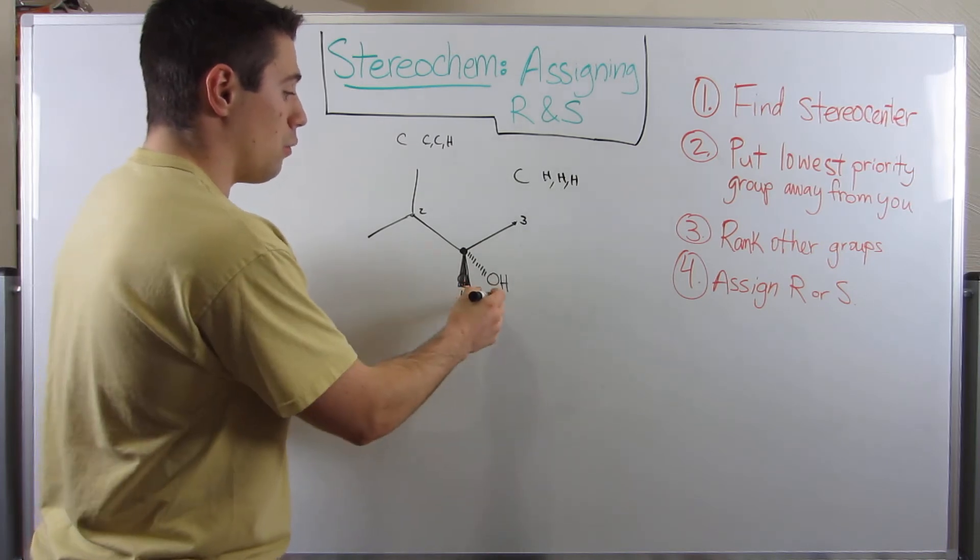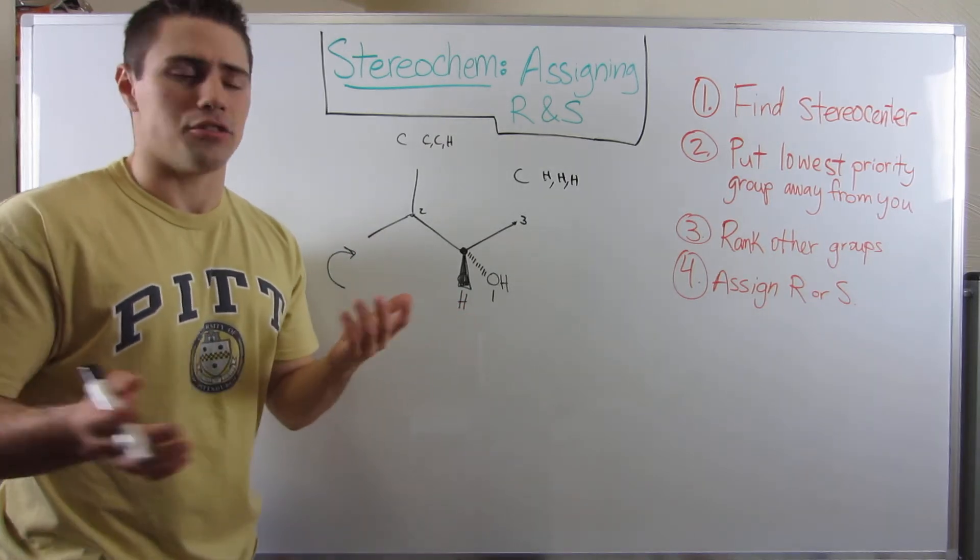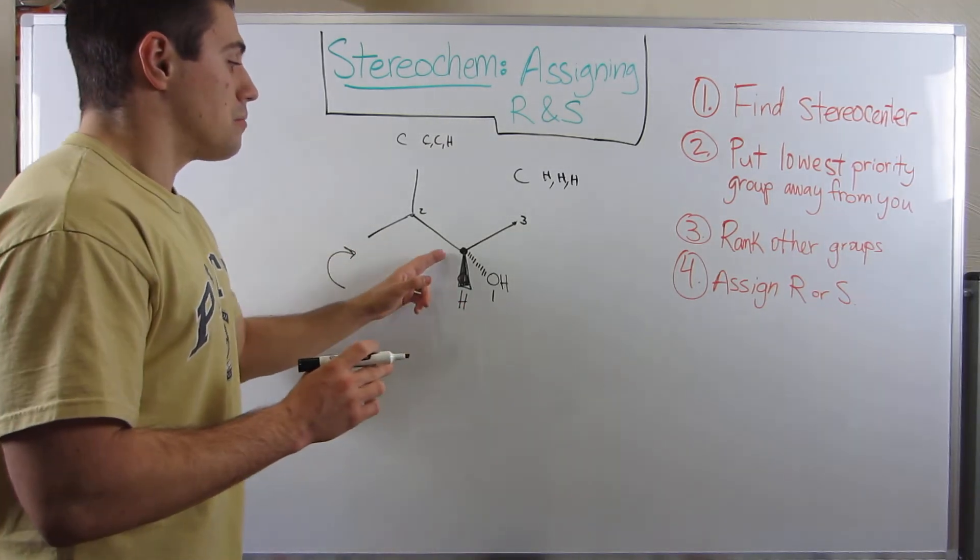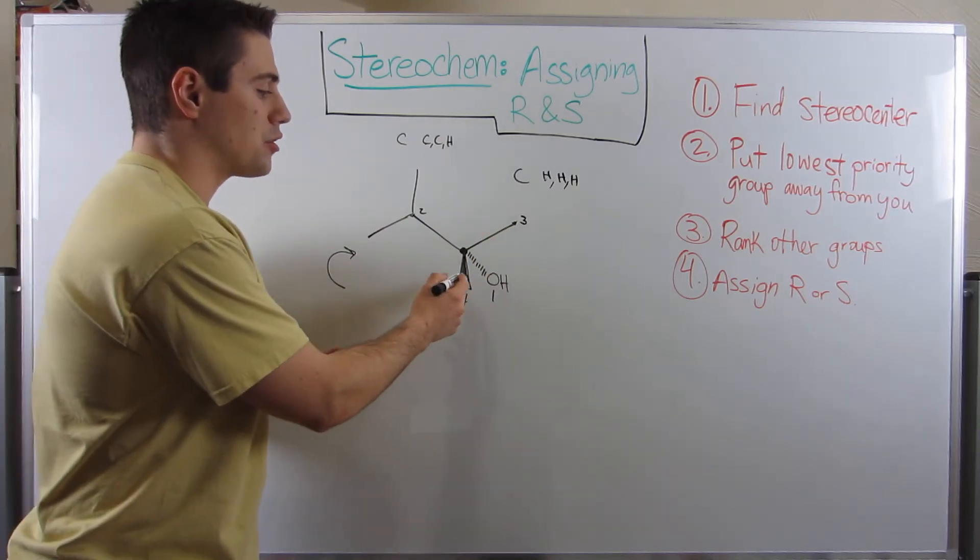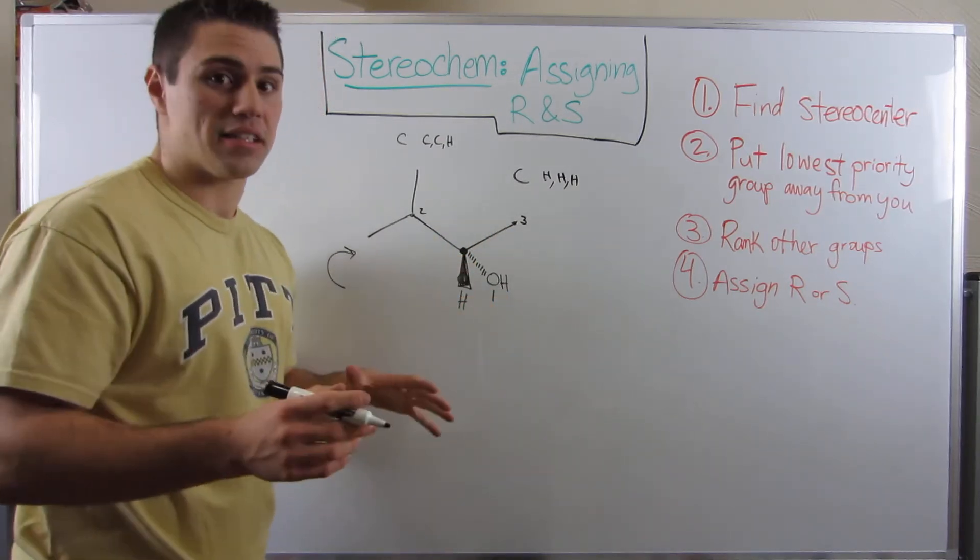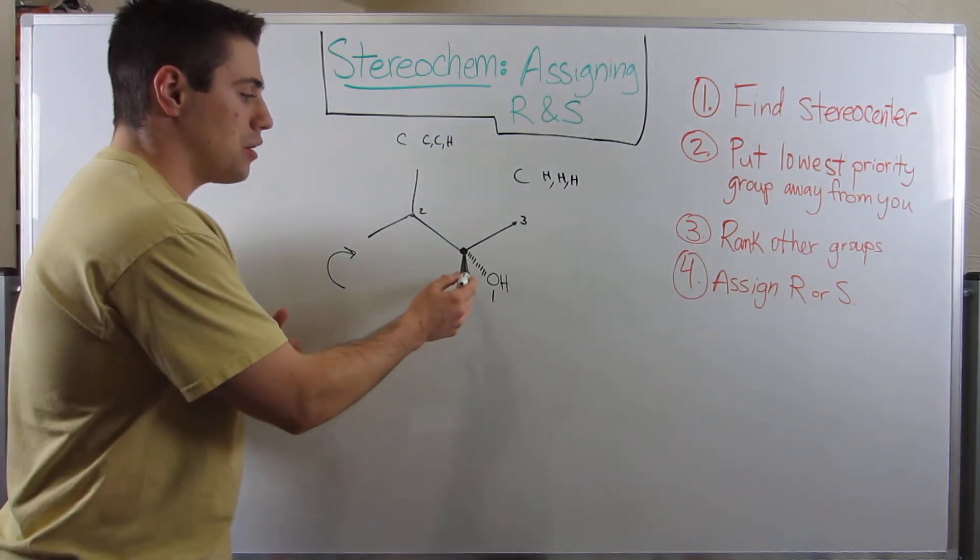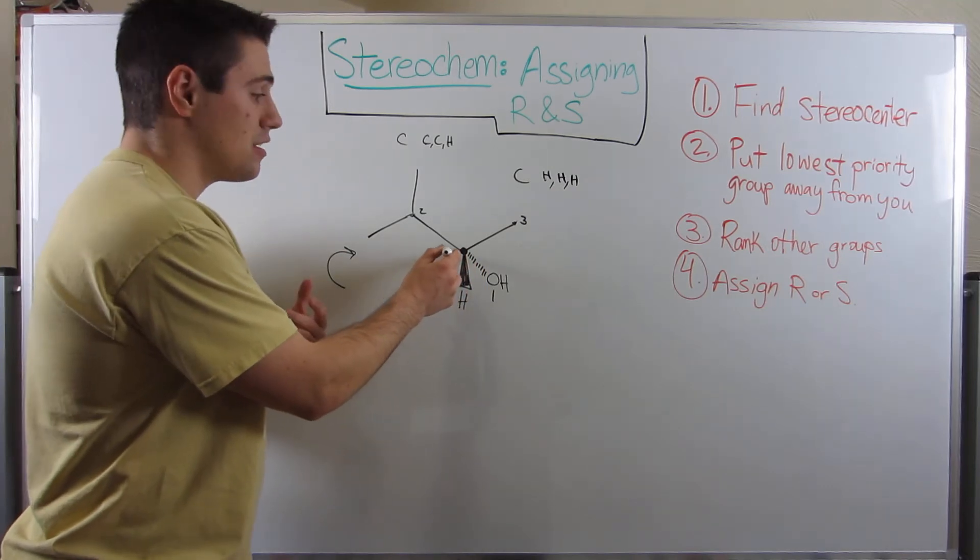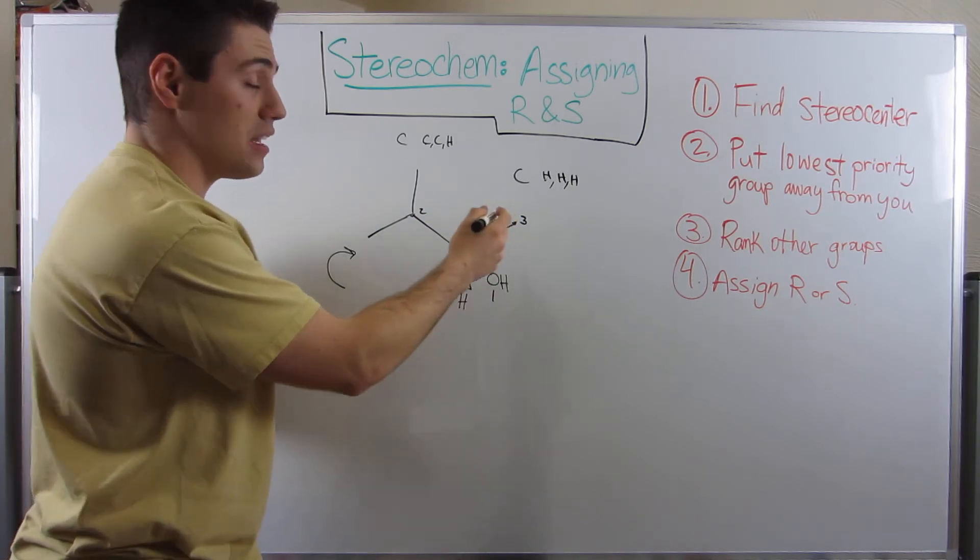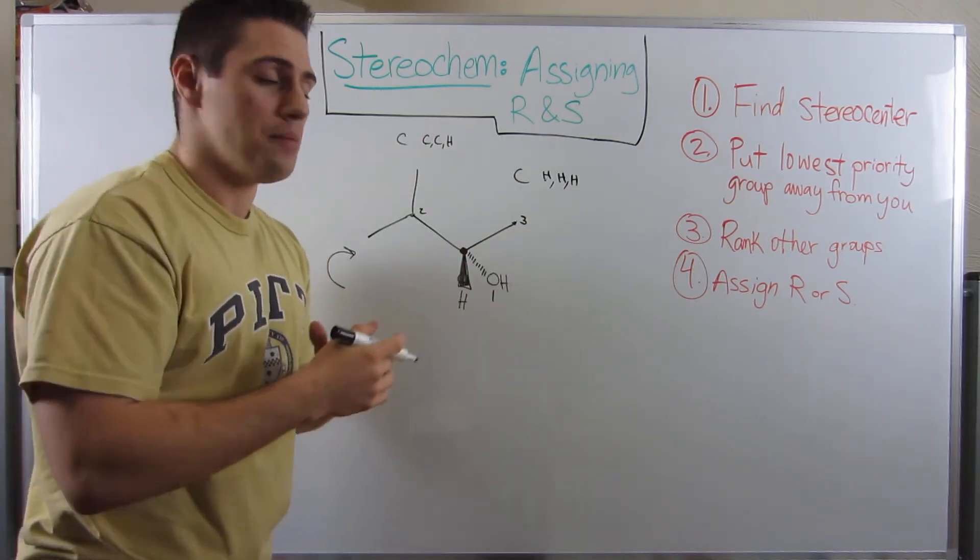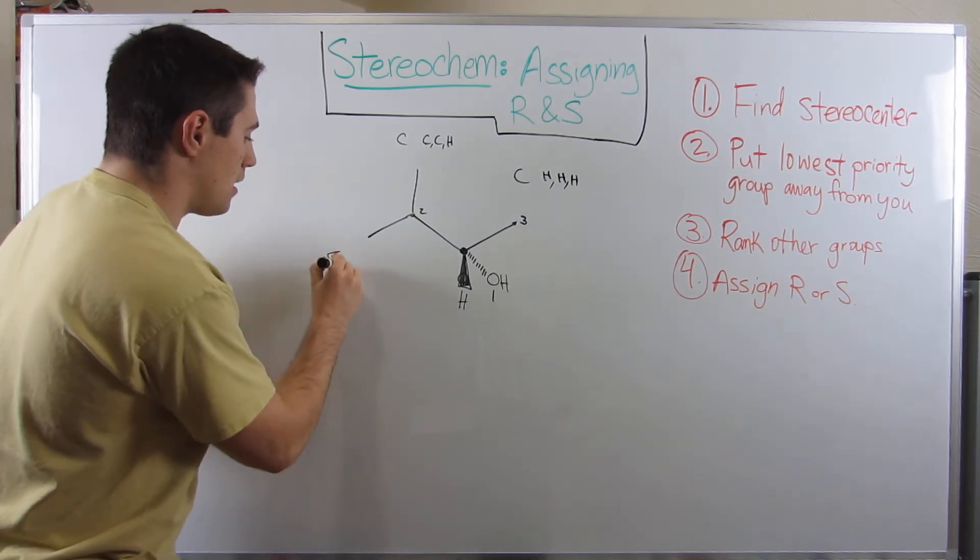Okay. So 1, 2, 3 looks like R, looks like nothing changed. However, you can only just straight up assign R or S if your lowest priority group is facing away from you. That's the convention. However, if it's facing at you, because we know that these wedges are coming out at us and these dashes are going away from us, all you do is you kind of look to see what it is. And then you take the opposite. So it looks like R, but it's actually S.